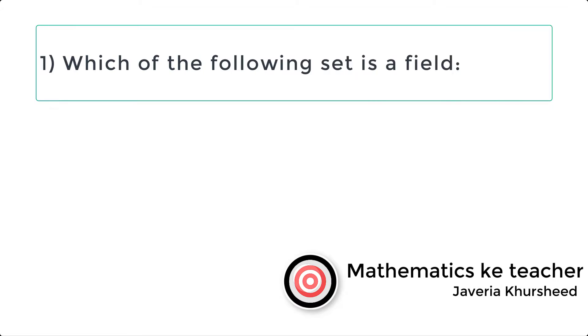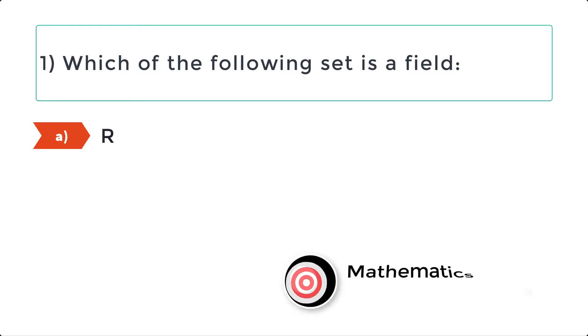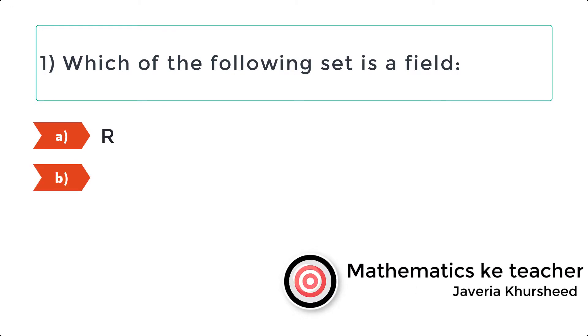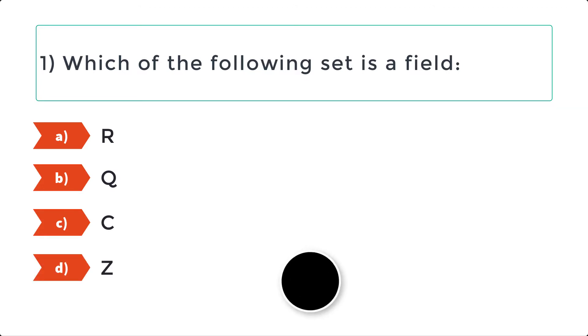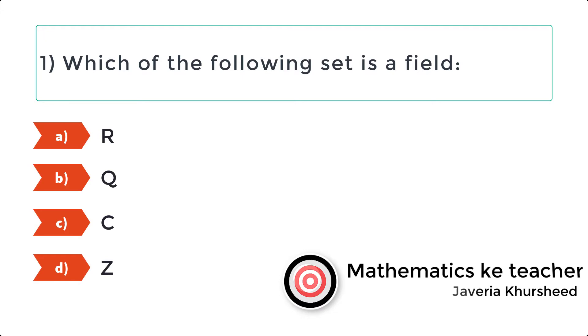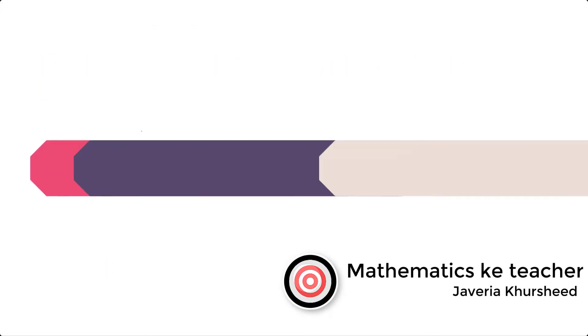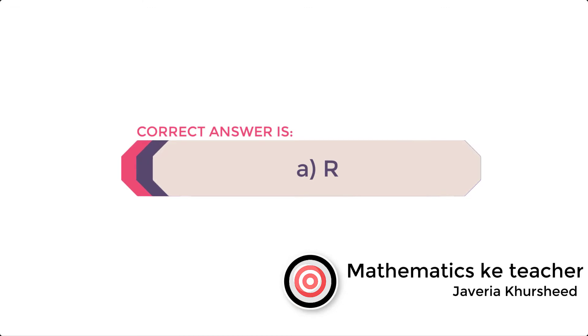Question 1: Which of the following set is a field? A. Set of real numbers, B. Set of rational numbers, C. Set of complex numbers, D. Set of integers. Correct answer is A. Set of real numbers.